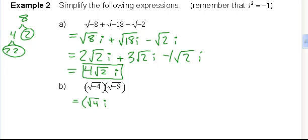So, here I'm going to go root 4 times i multiplied by root 9 times i, and that turns into 2i multiplied by 3i. If you multiply those together, what do you get? Good. 6i squared.